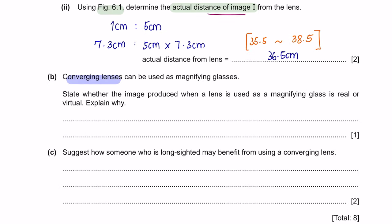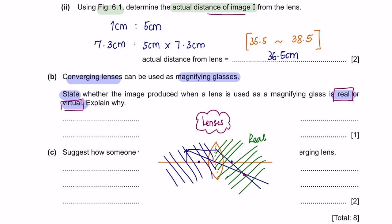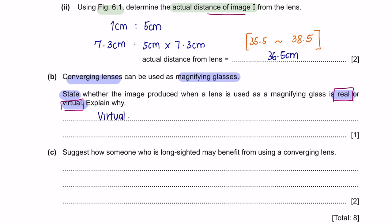Question B: Converging lenses can be used as magnifying glasses. State whether the image produced when a lens is used as a magnifying glass is real or virtual, and explain why. Images that form on the opposite side of the lens are real; images that form on the same side as the object are virtual — like reflections in a mirror. A magnifying glass gives a virtual image because, just like a mirror, the image cannot be projected onto a screen.